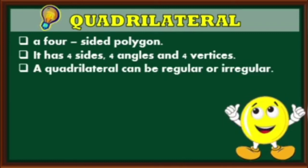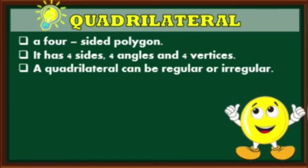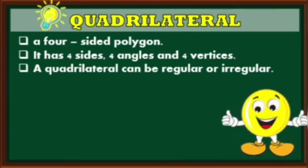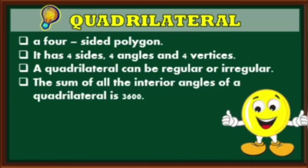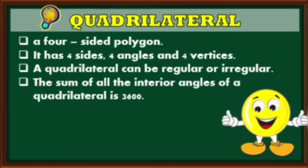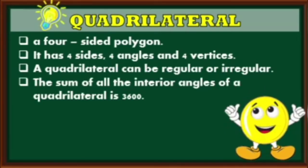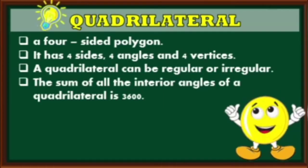A quadrilateral can be regular or irregular. And the sum of all the interior angles of a quadrilateral is 360 degrees.